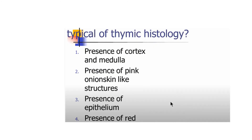If asked about typical thymic histology: presence of cortex and medulla — true for thymus; presence of pink onion skin-like structure (Hassall's corpuscles) — also true for thymus; presence of epithelium — not true about thymus as a distinguishing feature; presence of red pulp and white pulp — not true about thymus (that is the spleen). So options one and two are correct for the thymus.